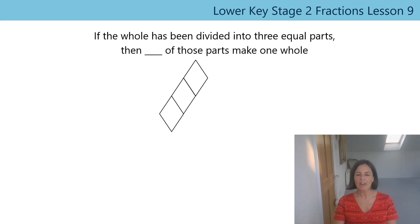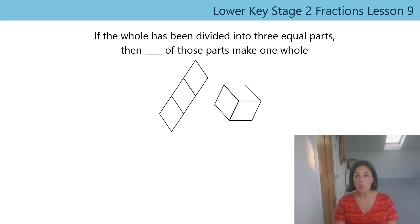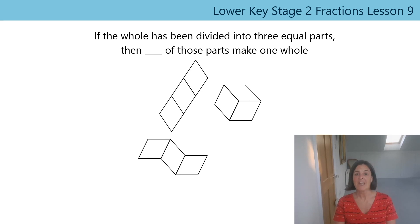So all of these wholes have three equal parts. We could say: if the whole has been divided into three equal parts, then one, two, three of those parts make one whole. Let's say that together for the next shape: if the whole has been divided into three equal parts, then three of those parts make one whole. And finally — you have a go.